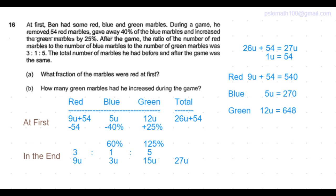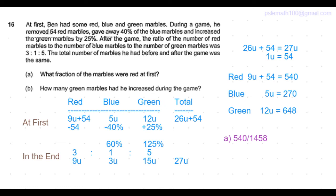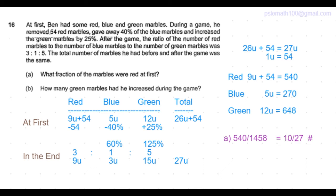So the first part of the question is what fraction of the marbles were red at first. That was 540 marbles over sum of all the marbles, that is 1458, equals 10/27.